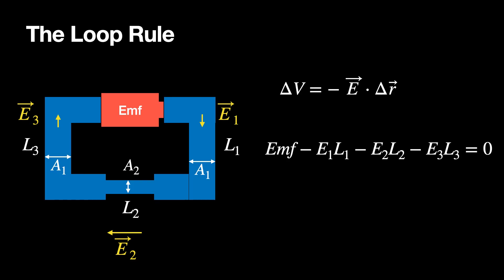What about the loop rule? Here's a slightly more complicated circuit: a battery and three wires — a thick wire, a thin wire in the middle, and a thick wire again. Using the change in electric potential around a loop, I get four pieces: first across the battery I get EMF, then E1 times L1, then E2 times L2, then E3 times L3, and all those have to add up to zero. That is the loop rule. This is just a property of conservation of energy — the electric potential is a type of energy, and since the work done by the electric field does not depend on path, the change in electric potential around a loop has to be zero.